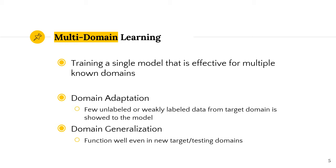The field of work on domain-agnostic approaches is called multi-domain learning, and there are two main approaches based on how the model will be trained. The first approach is called domain adaptation, where the model is trained on some number of domains and then fed few unlabeled or weakly labeled data from the target domain. It may work well on the expected target domain, but it will have problems on unseen domains and needs to be fine-tuned again each time. The second approach, which is our focus, is called domain generalization, and it functions well even in new target and testing domains.